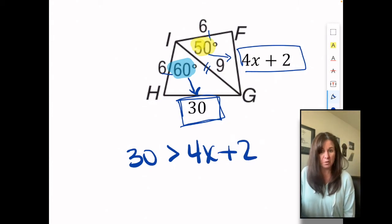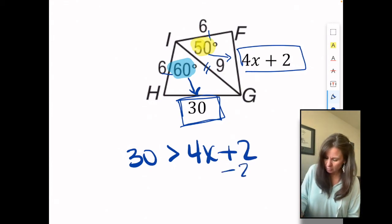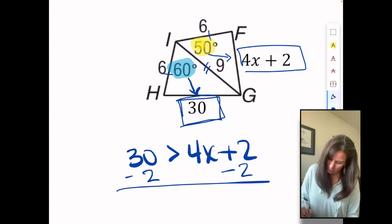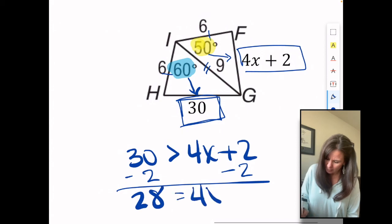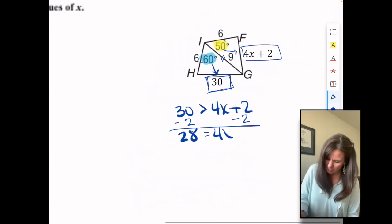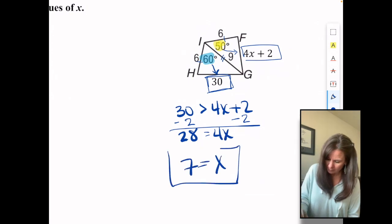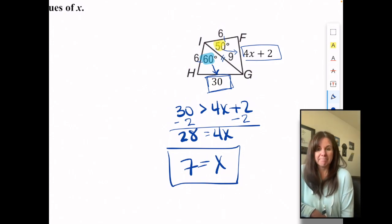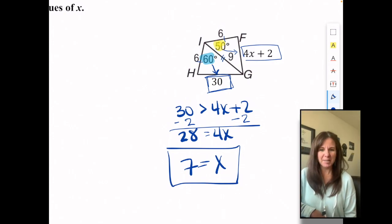Again, we'll solve for X. Subtract 2 from both sides. So we've got 28 equals 4X. Divide both sides by 4. And X equals 7. That's it. Thanks for being here.